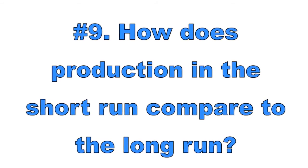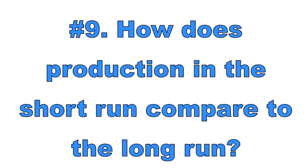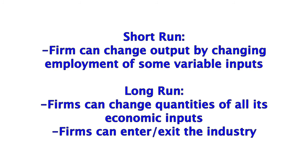Number nine: how does production in the short run compare to the long run? In the short run, a firm can increase output by employing more variable inputs, or reduce output by hiring fewer variable inputs. It can experience economic profits or losses, break even, or shut down and produce zero units. In the short run, the capacity of the plant is fixed. In the long run, a firm can change the quantities of all economic inputs and its plant capacity. Firms can also enter and exit an industry.